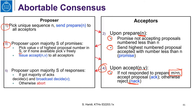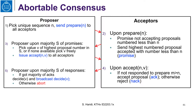When you get a majority of responses, if you get a majority of accepts, you decide and broadcast the decision to all learners; otherwise you abort. In general, when you abort, it means you are going to try again with a higher sequence number. This is the basic idea, so let us keep this in mind as we look at our examples.